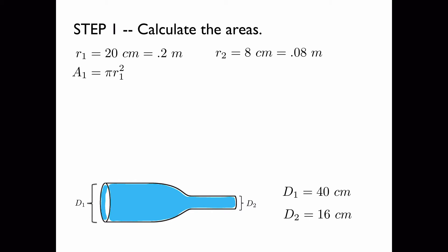We calculate the areas using the formula pi r squared. The area for the large pipe, and the area for the small pipe.